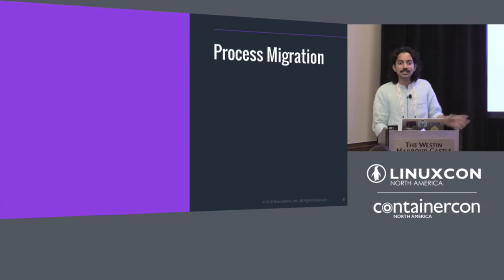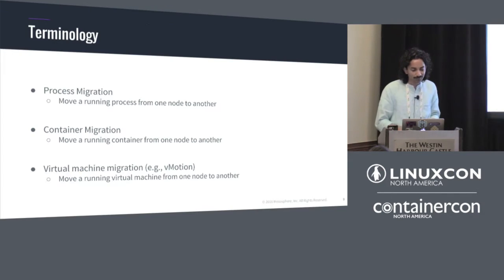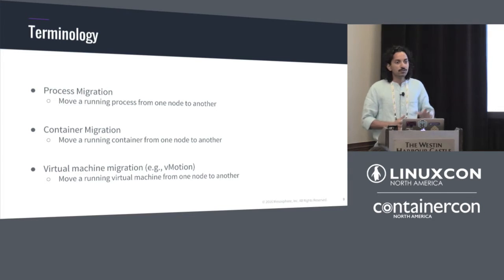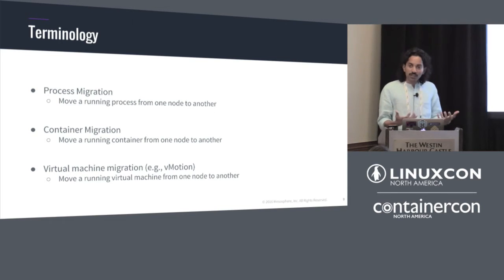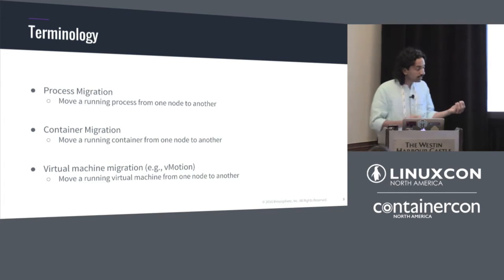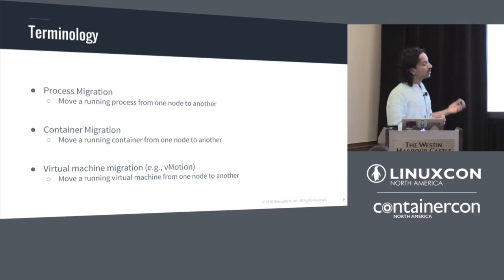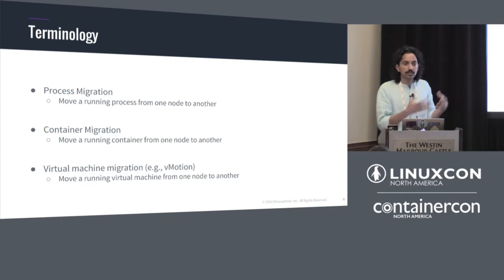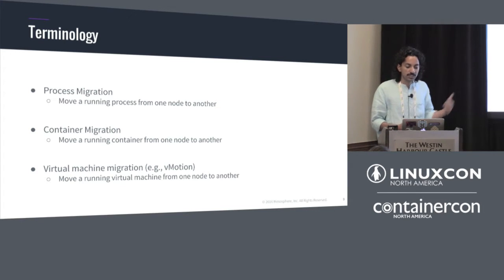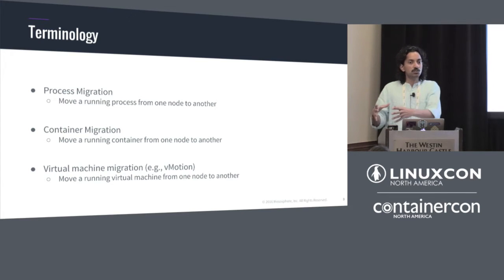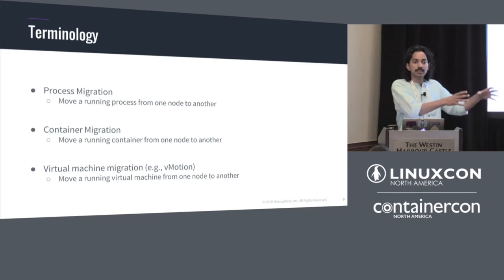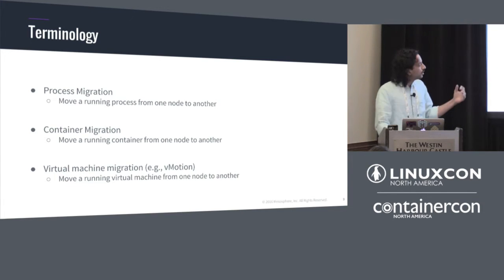Before we begin, a brief overview of terminology. When we say process migration, people usually refer to migrating a single OS process — like a single Linux process — from one node to another. Container migration involves migrating a container, which can have more than one process, to a different node. Finally, virtual machine migration — for example VMware vMotion, which most have heard of — migrates an entire virtual machine to a new node or data center, perhaps across a continent.